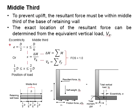The eccentricity needs to be less than one-sixth D. The one-sixth D is referring to one-sixth D on both sides of the central axis of the base.